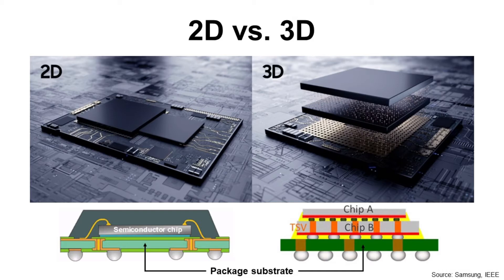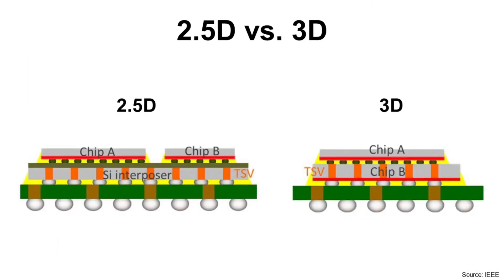How about 3D? As you can see in the picture, chip A is connected with chip B using micro bumps, and chip B is connected with the package substrate at the bottom through TSV. We call this structure 3D. What is the difference between 2.5D and 3D? Dies in a 2.5D package are electrically connected through a silicon interposer, but dies in 3D are electrically connected directly. 2.5D has TSV in the silicon interposer, but 3D has TSV in the dies themselves.